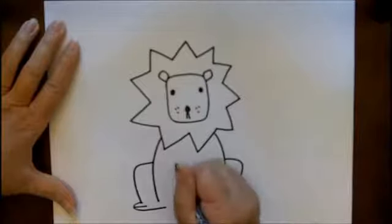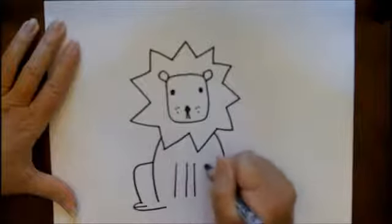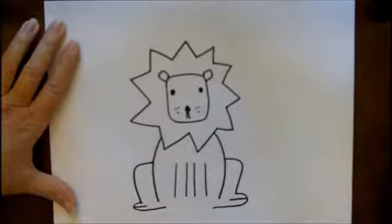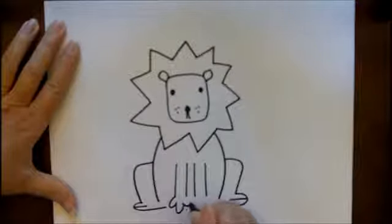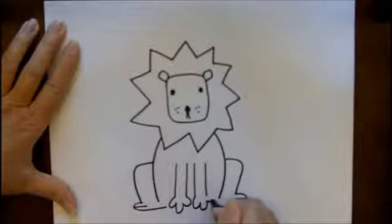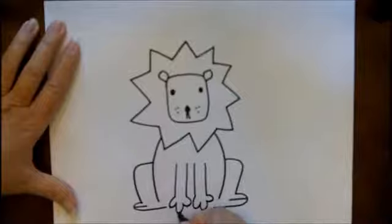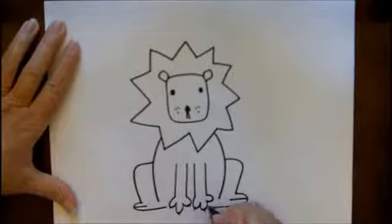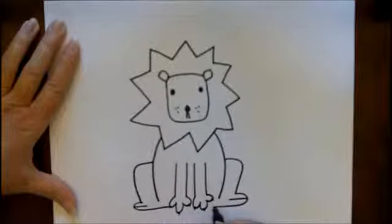For his front feet and his legs you'll just want to make four lines and then attached to those four lines we're going to put some semi circles. If you want to put a little bit of nail coming out of each tip that would be great too. Then let's close this up.